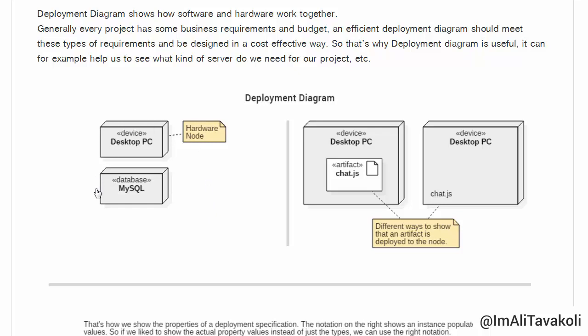In this first example, we have two nodes. The first one is a hardware node, and the second one refers to a software node — our MySQL database. This example demonstrates different ways to show that an artifact is deployed to a node.